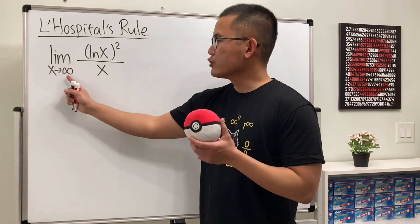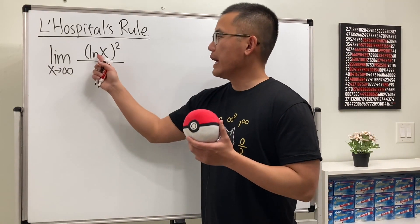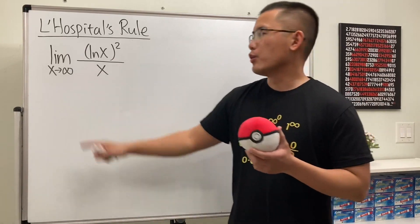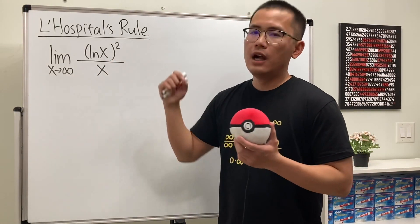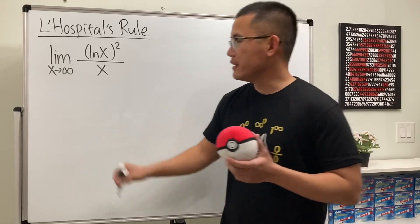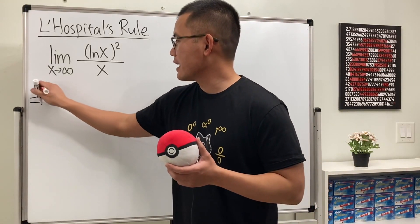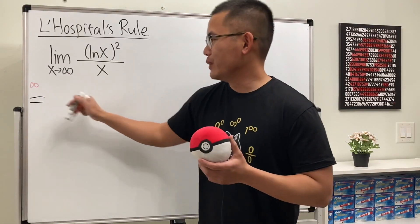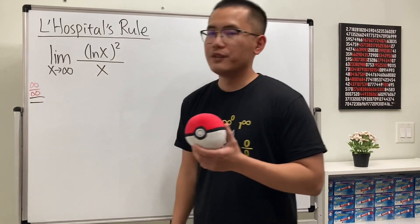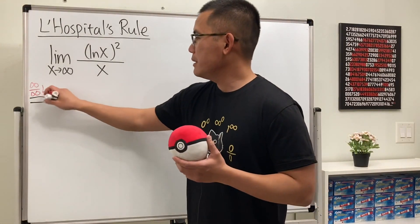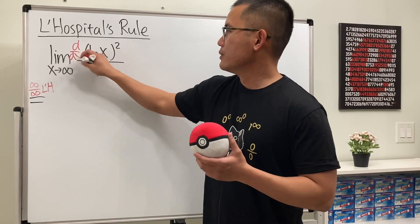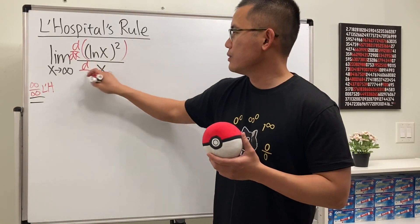Here we have the limit as x approaching infinity of ln x squared over x. When we plug in infinity, ln infinity is infinity, squared that will still be infinity, so we have infinity on the top and infinity on the bottom. It is an infinity over infinity situation, which means we can use L'Hôpital's rule.